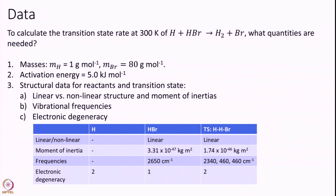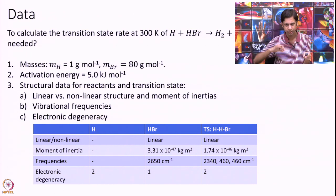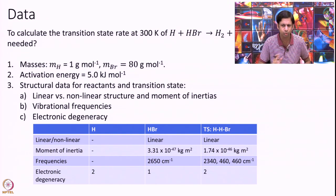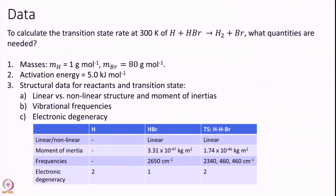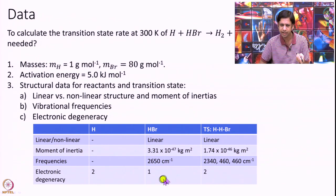I gathered all the data one way or another via experiment or otherwise. In a future module we will discuss how this data is exactly tabulated and how in practice you get it. For this course, when data is needed we will provide it. HBr is by definition linear and we have assumed the transition state to be linear. I have provided one frequency for HBr and three frequencies for the transition state. H has an electronic degeneracy of 2 because H can be in the positive or negative spin direction — alpha or beta. HBr has a degeneracy of 1, and the transition state is actually a radical with an electronic degeneracy of 2.